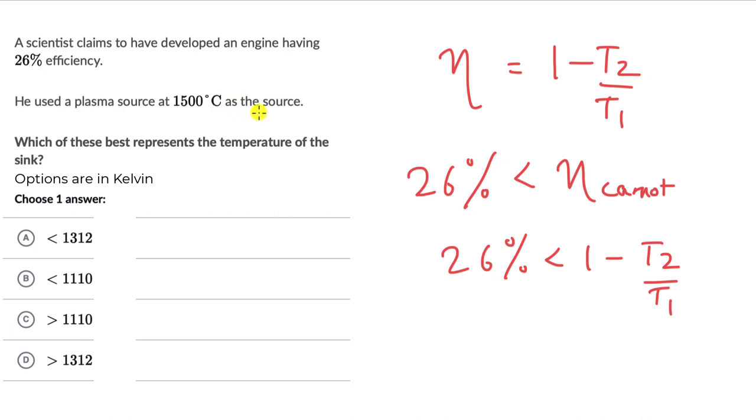To do that, this is 1500 plus 273, so that is 1773 kelvins. And this inequality becomes 0.26, we remove the percentage by dividing it with 100. This is less than 1 minus T2 divided by 1773.